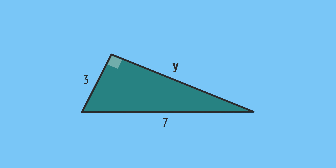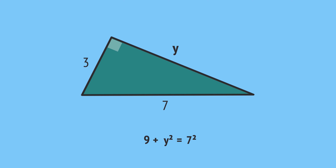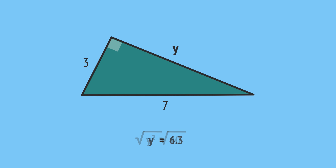In this right-angled triangle, we know the longest side, which we label c. And we need to calculate y, one of the shorter sides, which we label a and b. The sides are related by Pythagoras, so we substitute into the formula to give 3 squared plus y squared equals 7 squared. Calculating the squares gives 9 plus y squared equals 49. We get y squared on its own by subtracting 9 from both sides, which gives y squared equals 40. And we take the square root of 40 on a calculator to get y equals 6.3 when rounded to one decimal place.